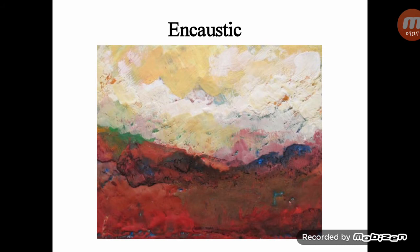Encaustic, also known as hot wax painting, involves using heated beeswax to which colored pigments are added. The liquid paste is then applied to a surface, usually prepared wood, though canvas and other materials are often used. Wax gives a clear, luminous effect.